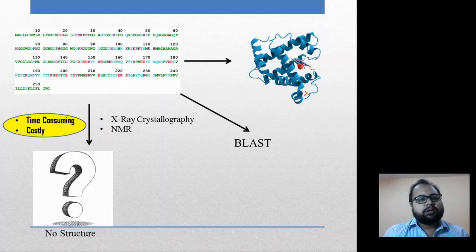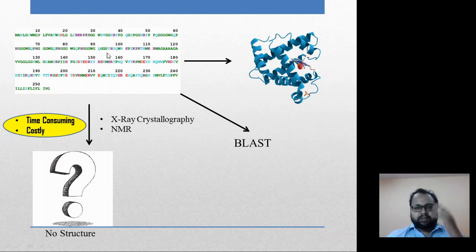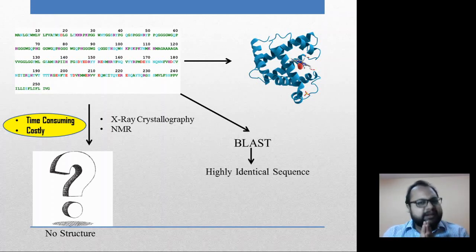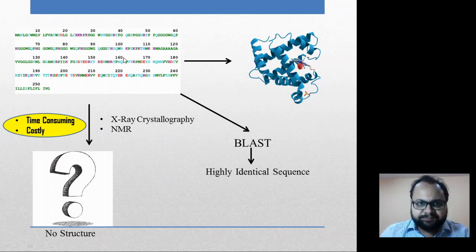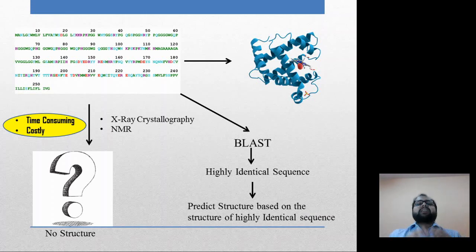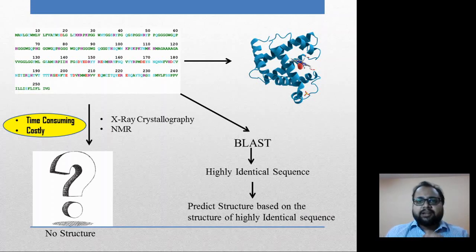We carry out a pairwise alignment of our protein sequence with all the other protein sequences present in different databases like UniProt or Swiss-Prot. From this, what will happen is you will get a highly identical sequence — a sequence which is highly identical to our unknown sequence — and from this we can predict what is going to be the three-dimensional structure.